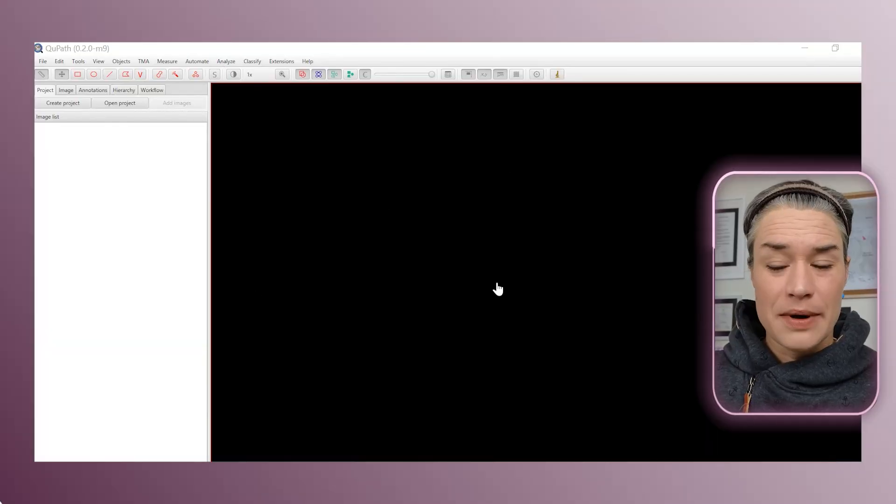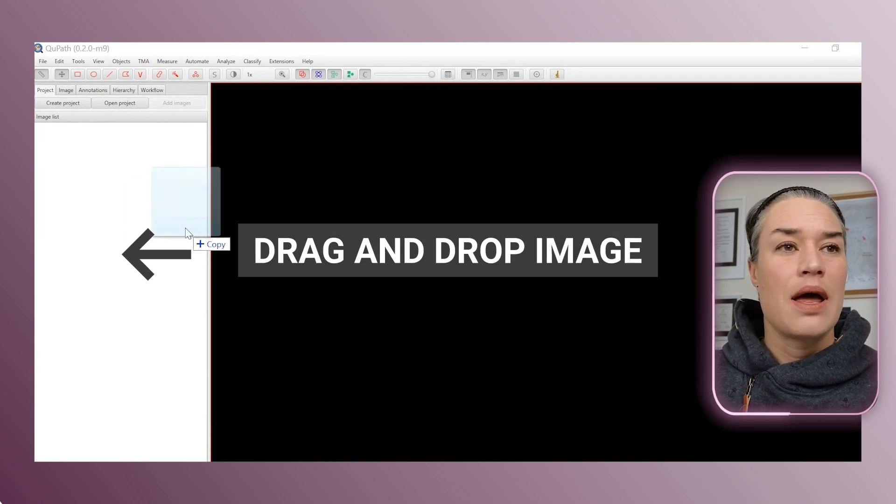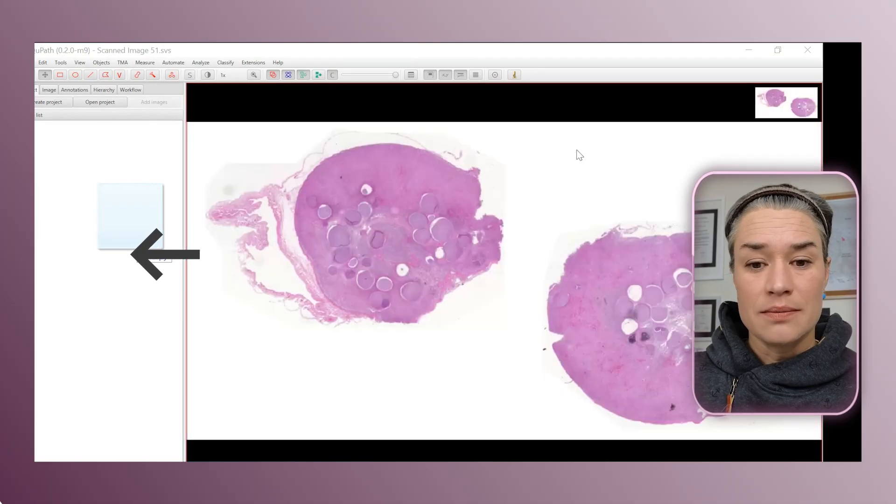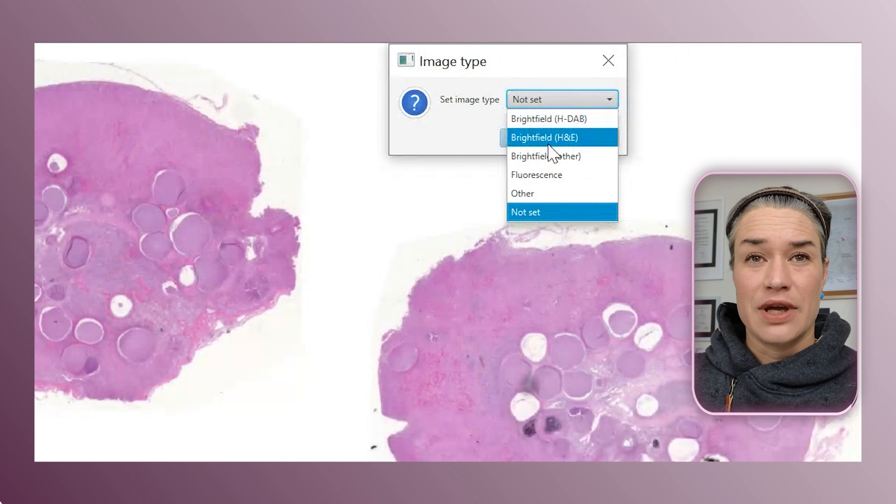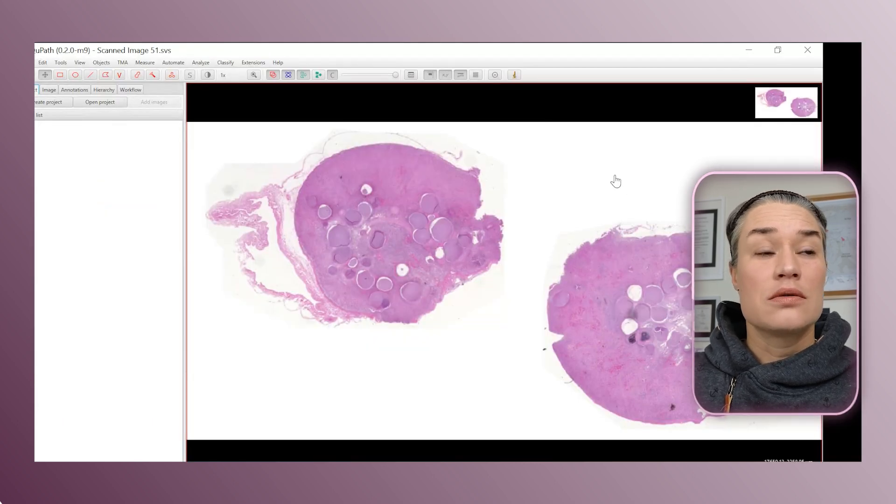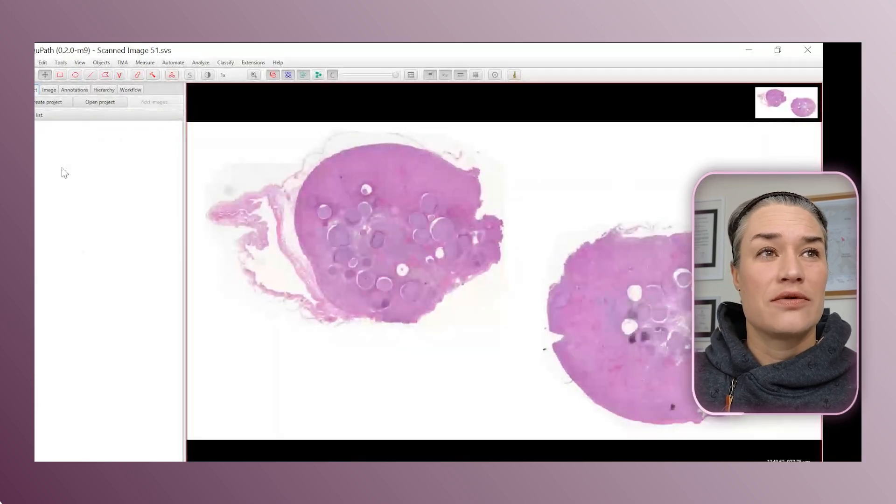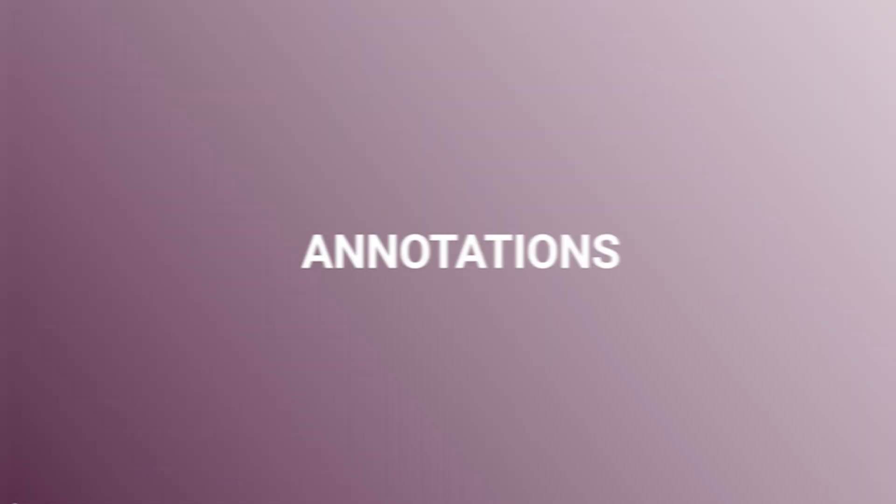Here we are in QPath and what we need to do is drop an image here. I have a few images scanned, so I can just drop one here. It's going to ask me a question about the image type. This is Brightfield H&E. If you wanted to have multiple images, you would have to open or create a project. Today we're just going to be focusing on annotations.